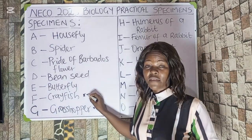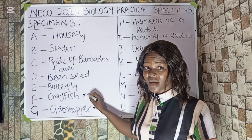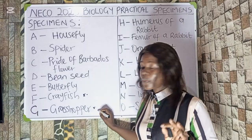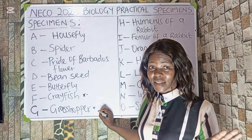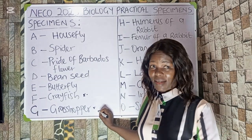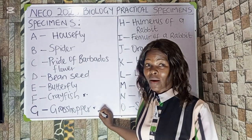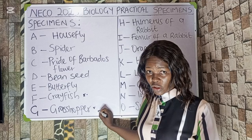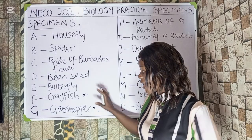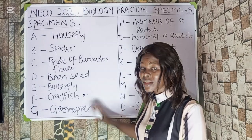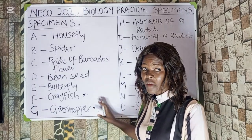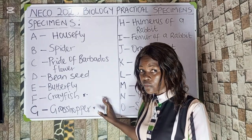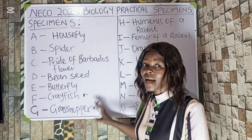Crayfish lives in fresh water while grasshopper lives in the grassland. They can ask you about their habitats or even their phylum. These are the things they can ask you under these two specimens.